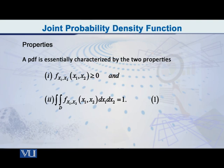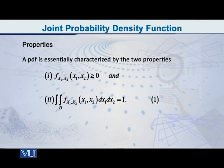Next, I will talk about the fundamental properties of the joint probability density function. The properties are as follows. Number one: small f of x1, x2 at the point x1, x2 has to be greater than or equal to zero. Number two: the double integral of small f of x1, x2 at the point x1, x2, with respect to x1 and x2, has to be equal to 1. Now, our random vector capital X1, capital X2 is defined on a space capital D.